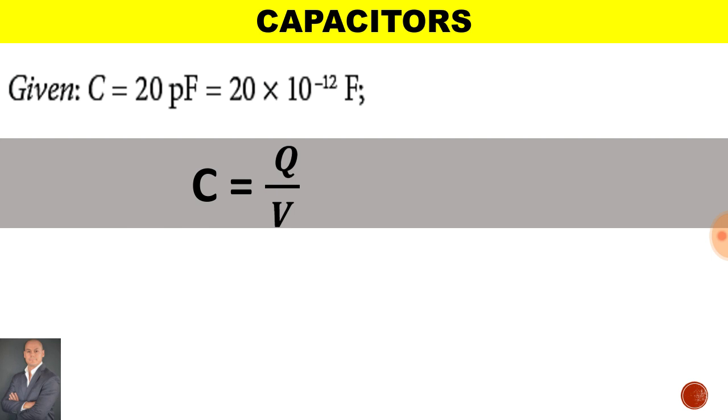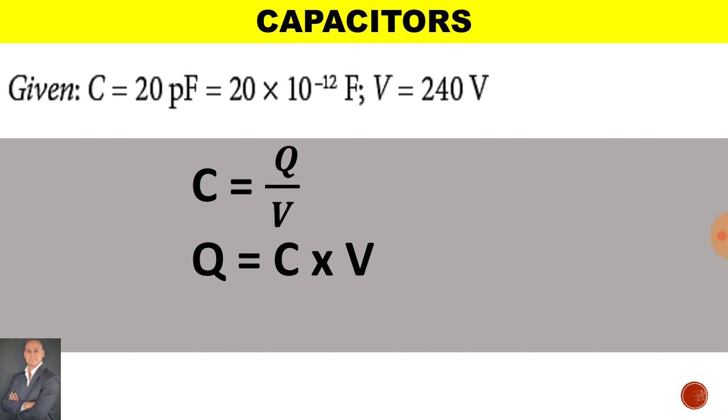If we are given a capacitance of 20 picofarad which is 20 times 10 to the minus 12 and a voltage of 240 volts, what will be the charge in coulombs?